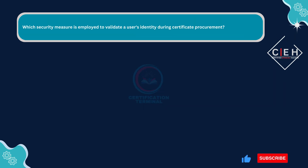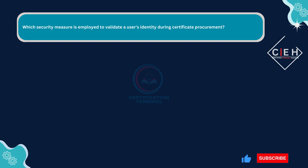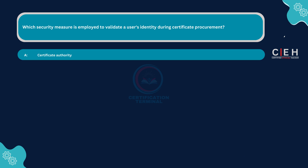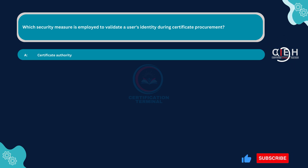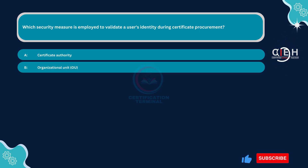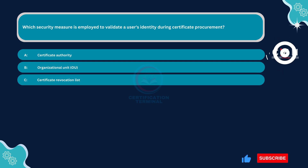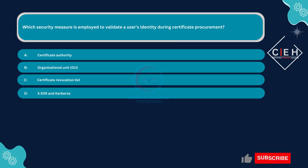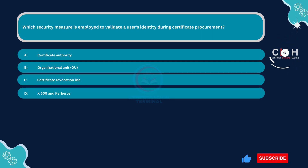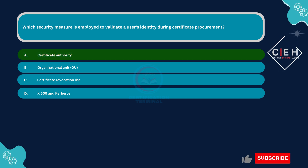Next question. Which security measure is employed to validate a user's identity during certificate procurement? Option A: certificate authority. Option B: organizational unit. Option C: certificate revocation list. Option D: X.509 and Kerberos.